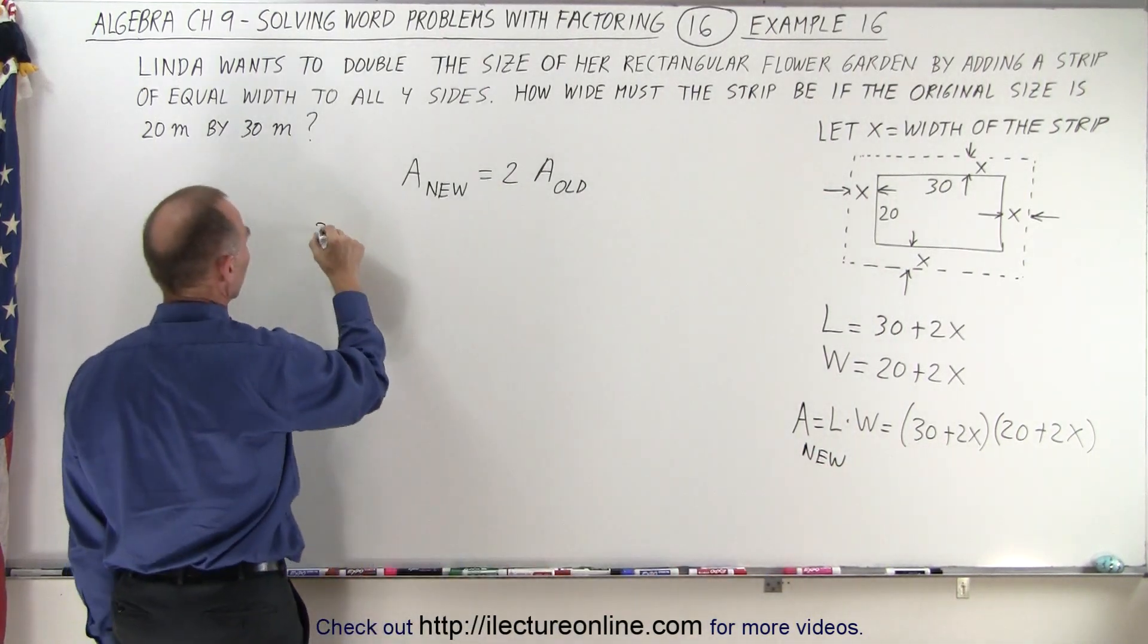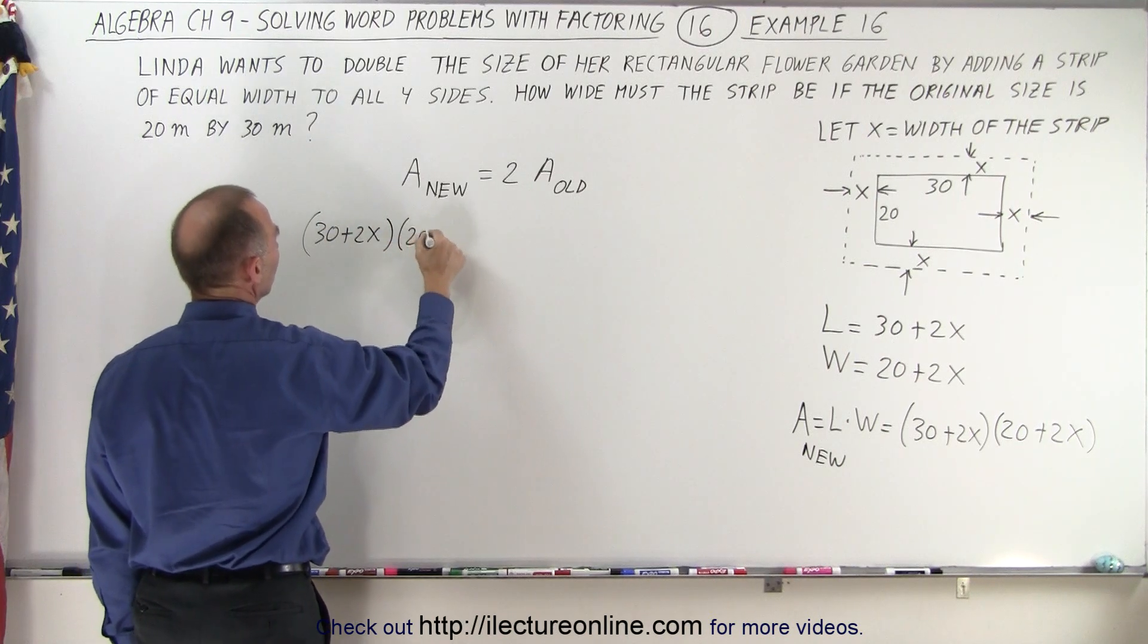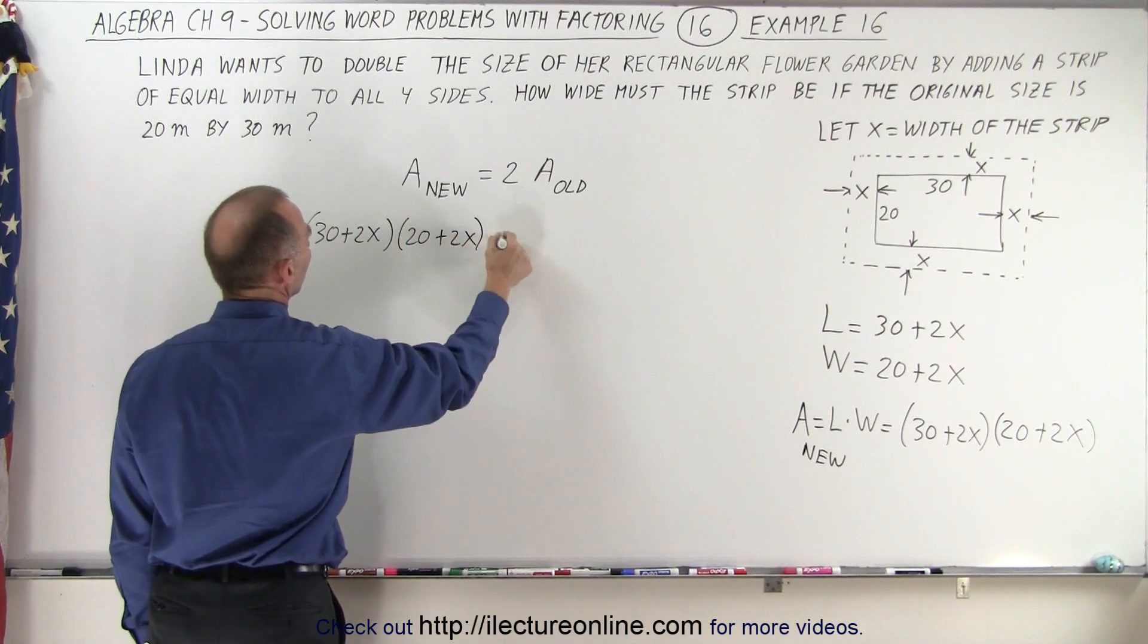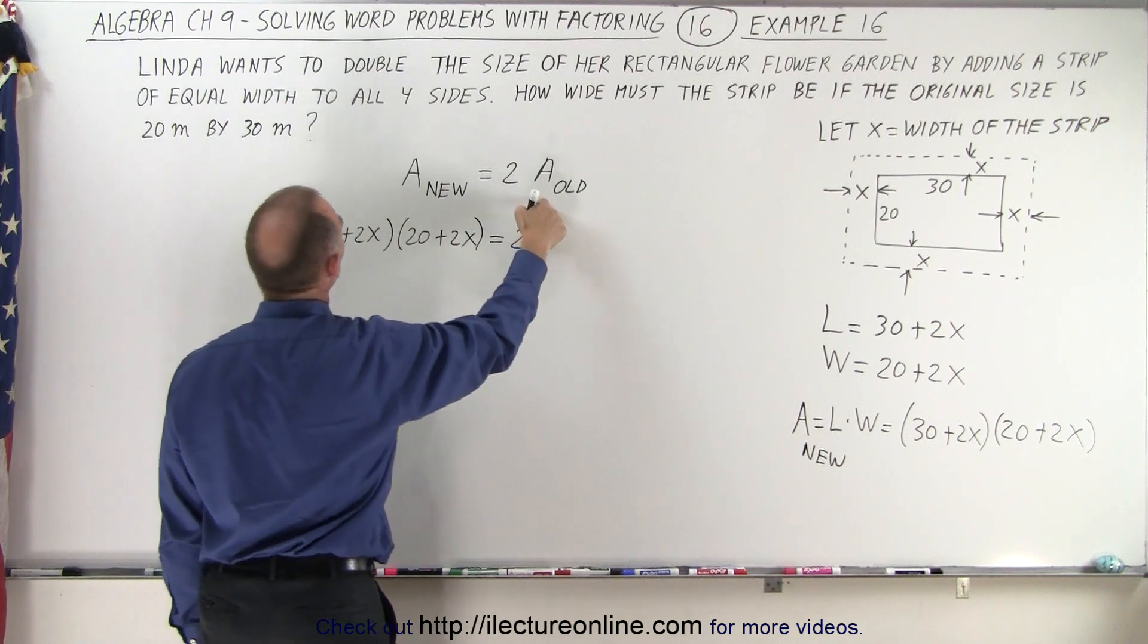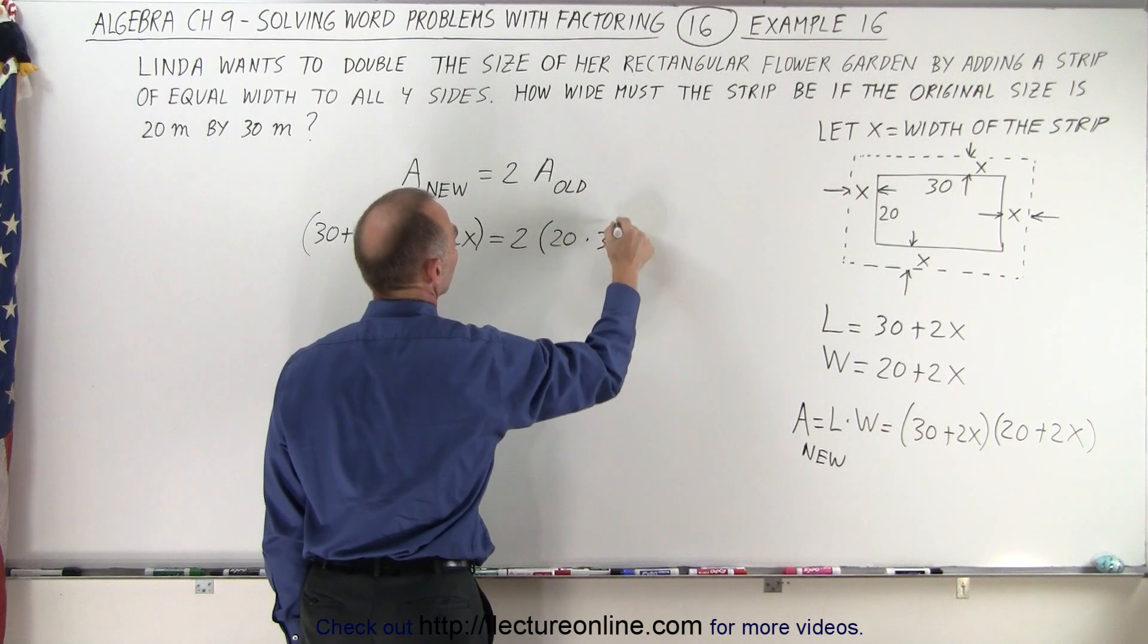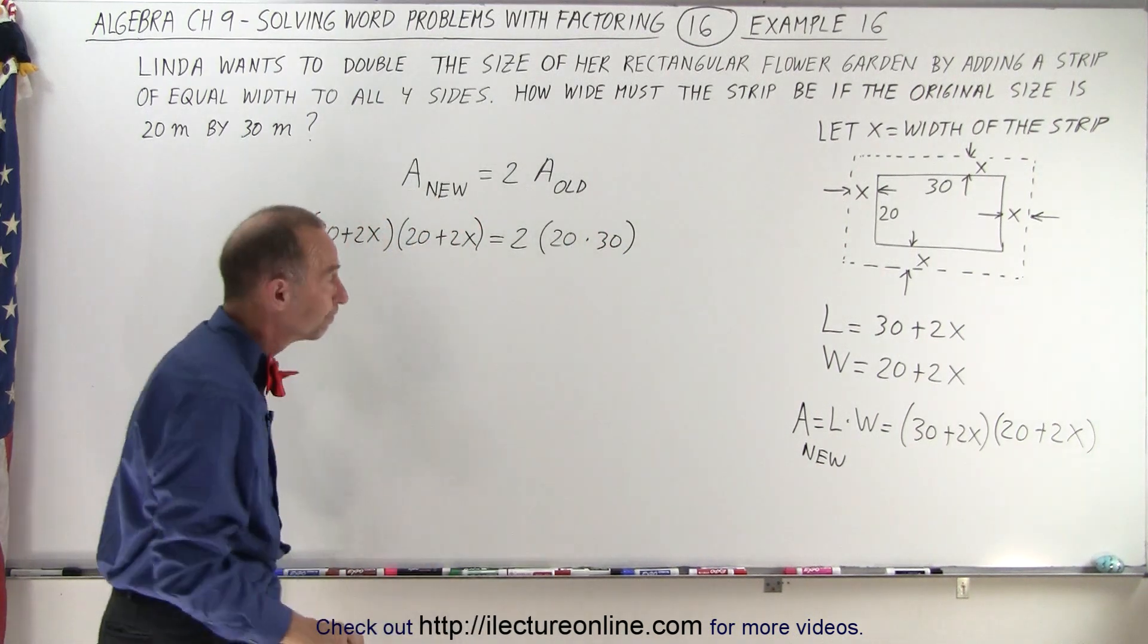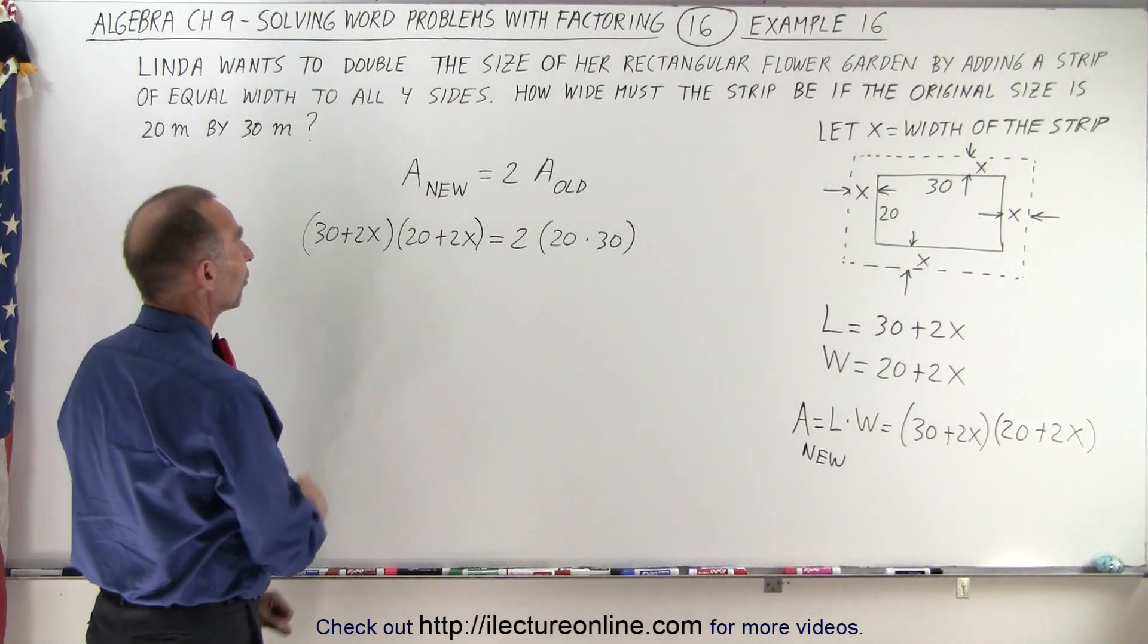So we can say that the product 30 plus 2x times 20 plus 2x must equal 2 times the area of the old one, which would be 20 times 30. So that would be the area of the old one and that would be twice the area of the old one. Now we have to solve this for x.